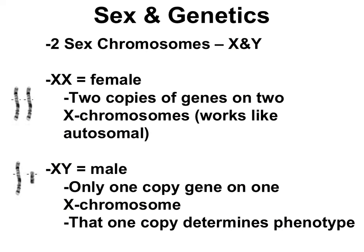Here are the rules on sex-linked genes on the X chromosome. Females have two X chromosomes, so they work similarly to tracking autosomal genes — a female with X-big-A X-little-a will show the dominant trait, just like a heterozygous autosomal individual. Males have only one X chromosome and one copy of the X-linked genes. The one version of the X chromosome the male gets determines his phenotype — if he has X-little-a, he has the recessive phenotype, with no second allele to mask it.